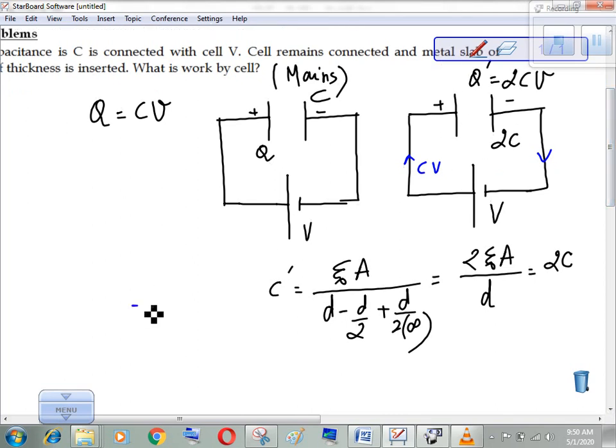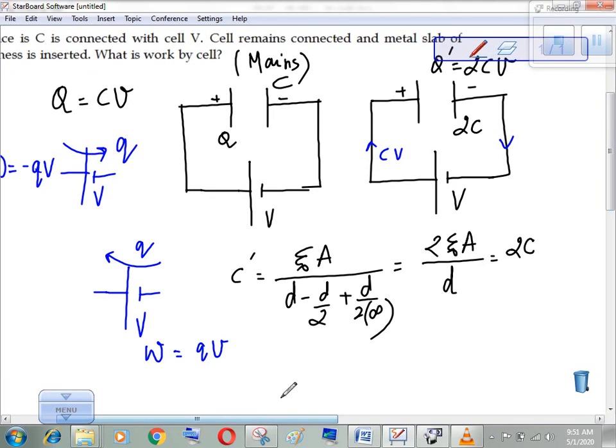CV is the charge that passed. We have learned that if cell drew charge, then cell work is QV. And if cell discharged, then minus QV is the work. In this case, CV is the charge into V. This is the work by the cell.